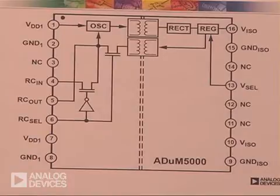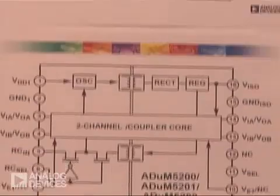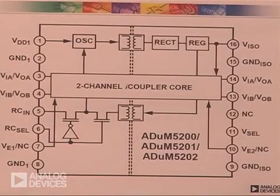The ADUM5000 is a power only module. It includes no data channels. The ADUM520X is a two-channel data module. Each channel can run 25 megabits per second.